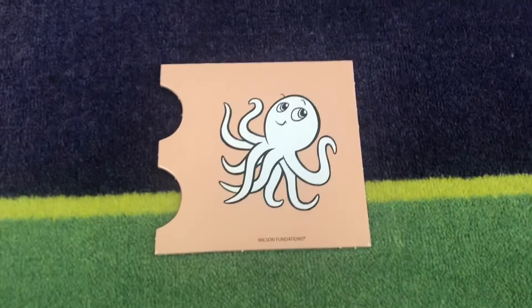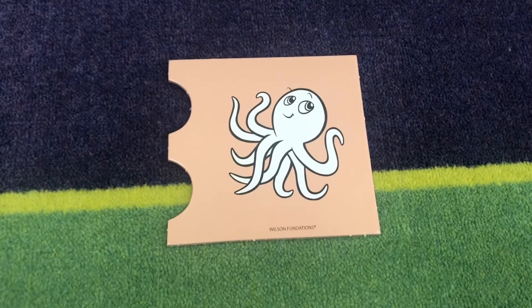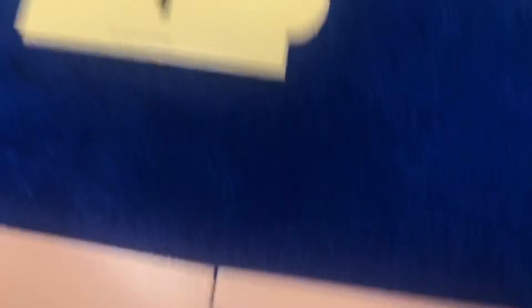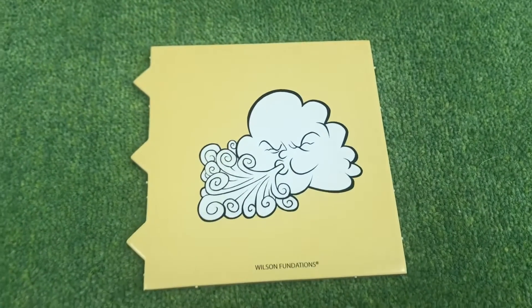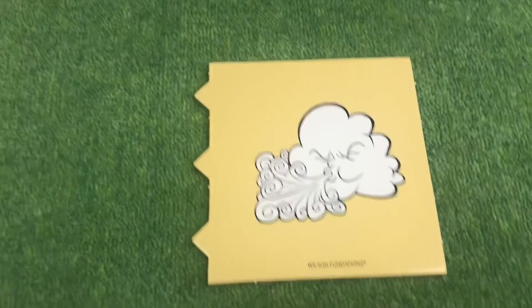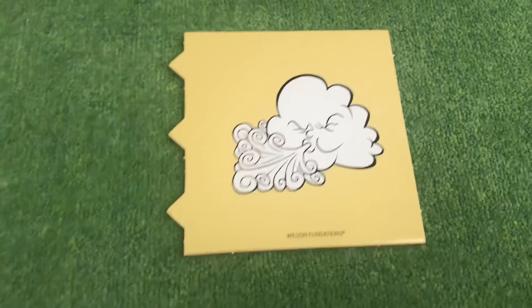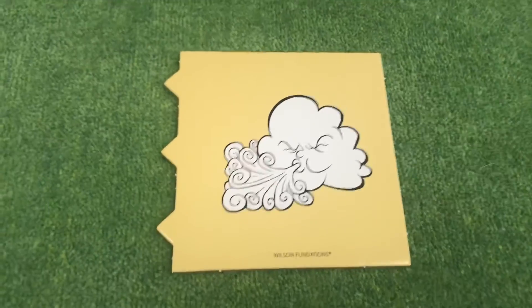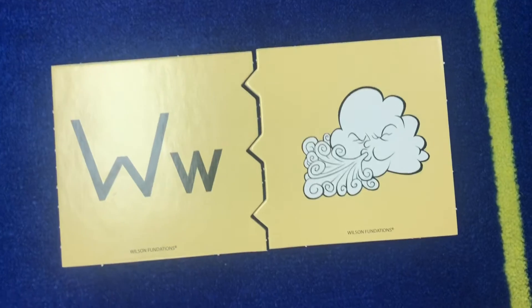This is an octopus. Say octopus. What does octopus start with? O is correct. O, octopus. What is this a picture of? It's a cloud blowing, but this is wind. Say wind. What does wind start with? W is correct. W, wind.